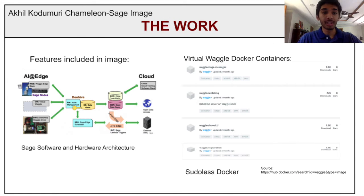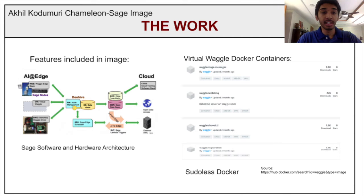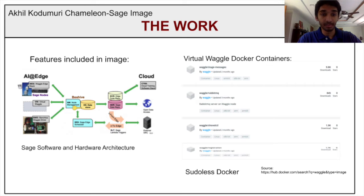In order to streamline Sage services with Chameleon hardware, the Sage image should include all of Sage's software and services. That's where my work comes in. I worked on creating an image that includes all of Sage's software and services, which is in turn compatible with Chameleon hardware. You can see an overview of Sage's architecture in the image below.